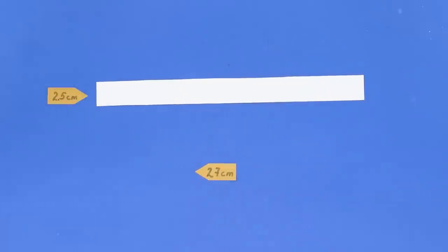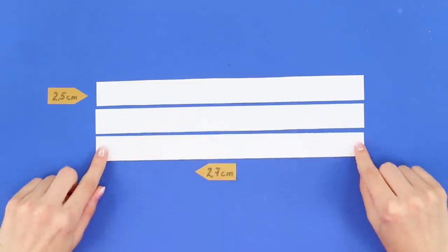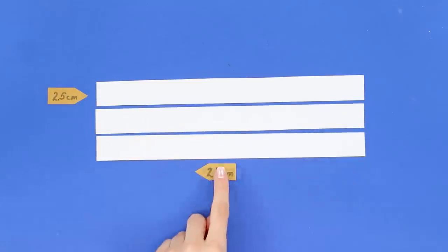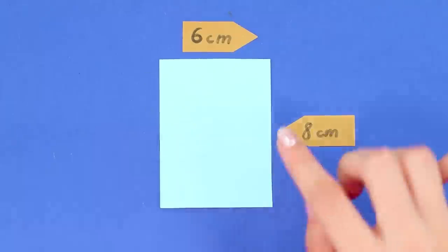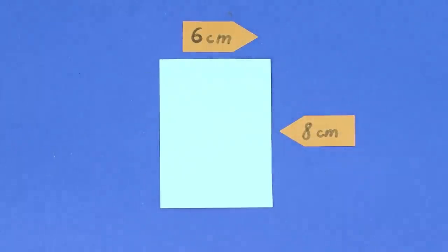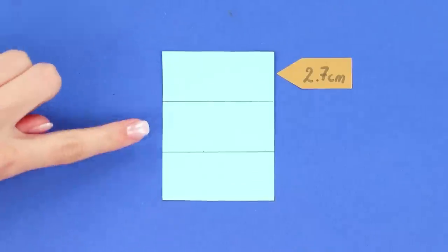You need three paper strips with a width of 2.5 cm and a length of 27 cm. Now, prepare a paper rectangle with sides of 6 and 8 cm. Divide it into three equal parts.